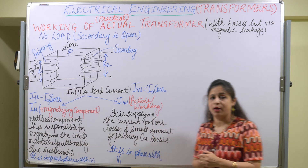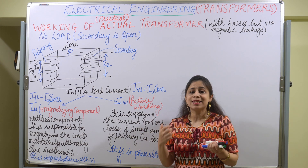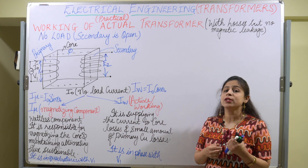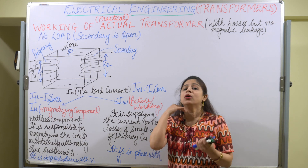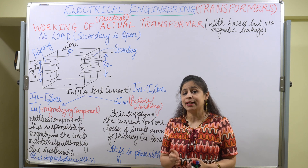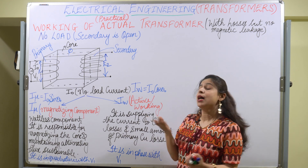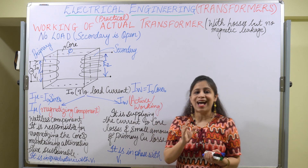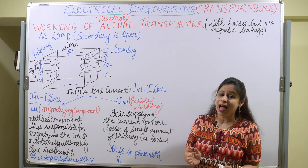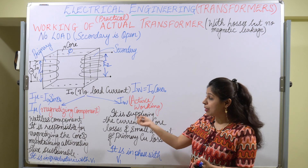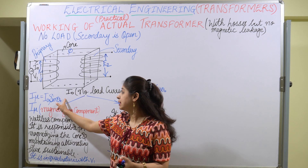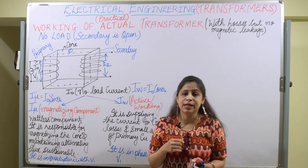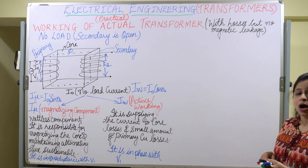Now let us move to the phasor diagram. We know that the coils are inductive in nature, so for ideal inductive coils, current lags voltage by exactly 90 degrees. But here, because of the losses and because this is a practical transformer, the current will not lag by exactly 90 degrees — it will lag by some angle theta naught.